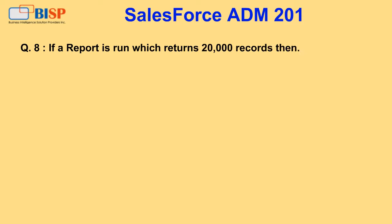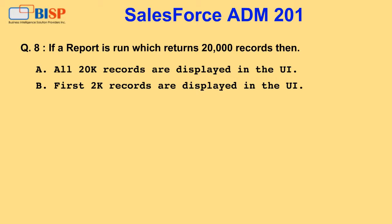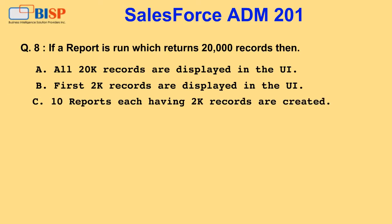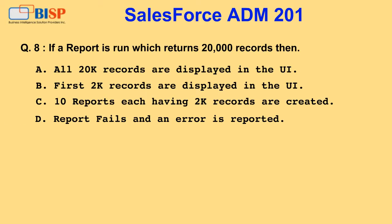Question 8. If a report is run which returns 20,000 records then: A. All 20,000 records are displayed in the UI. B. First 2,000 records are displayed in the UI. C. Ten reports each having 2,000 records are created. D. Report fails and an error is reported.